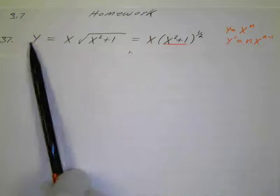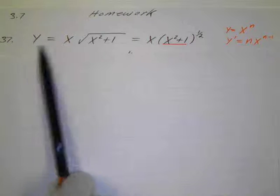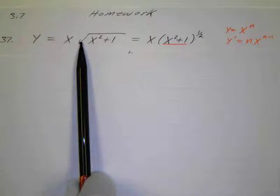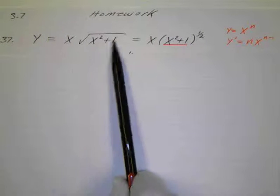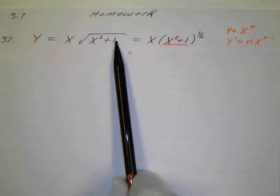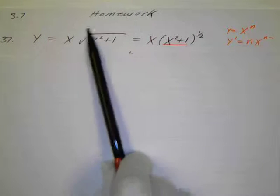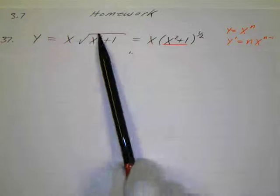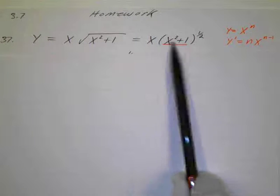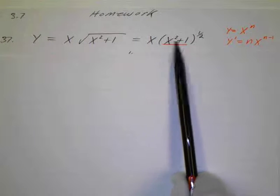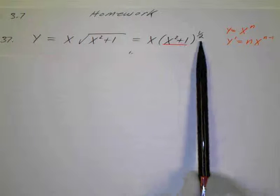So here we have a function: y equals x times the square root of x squared plus 1. I'm going to write this using fractional exponents, so x times x squared plus 1 to the 1 half.